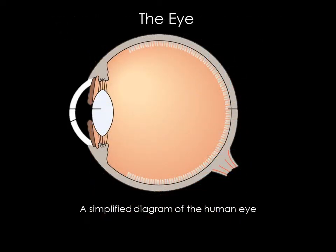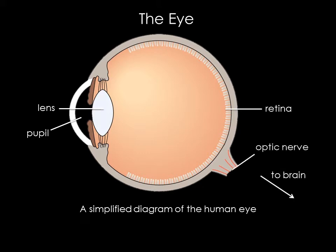Let's start with the eye. Its basic components are a pupil, lens, and retina. The pupil controls how much light enters the eye. The lens bends light to form an image on the retina. And the retina contains light-sensitive cells called cones and rods that, when triggered by light, send signals to the brain via the optic nerve.